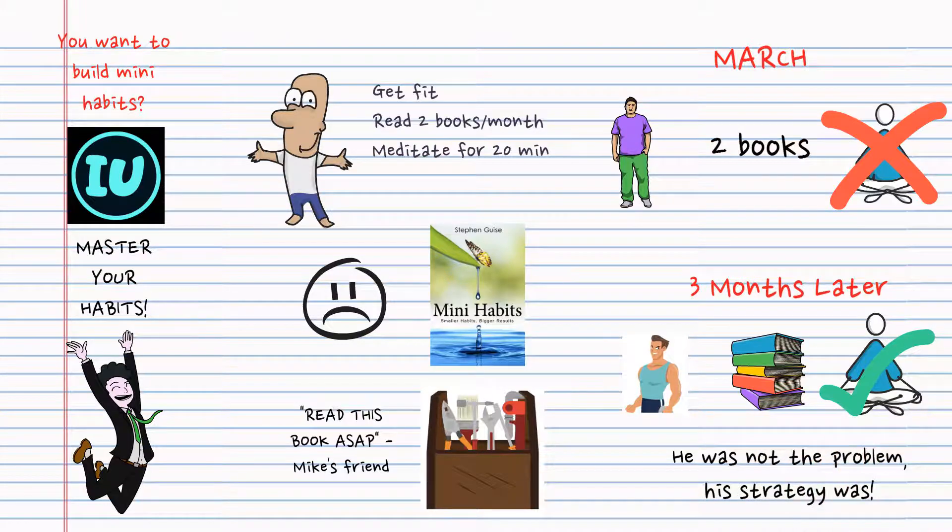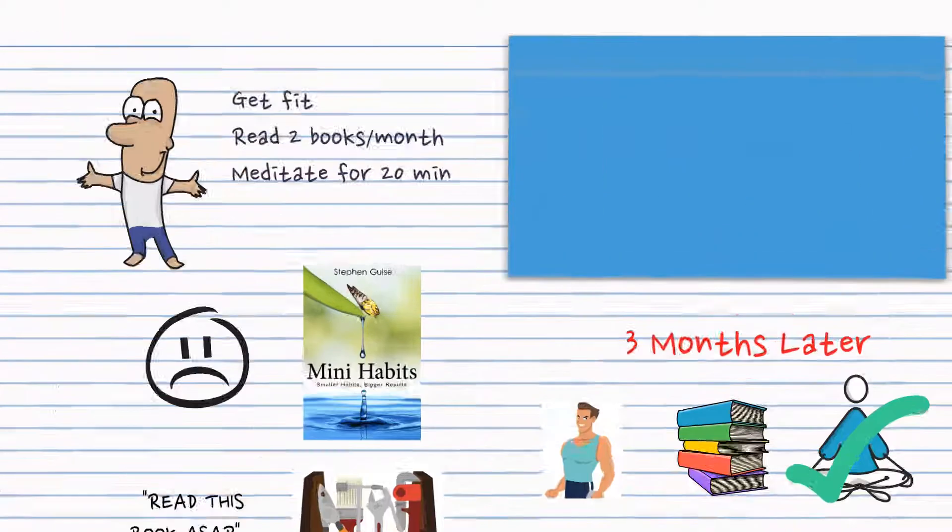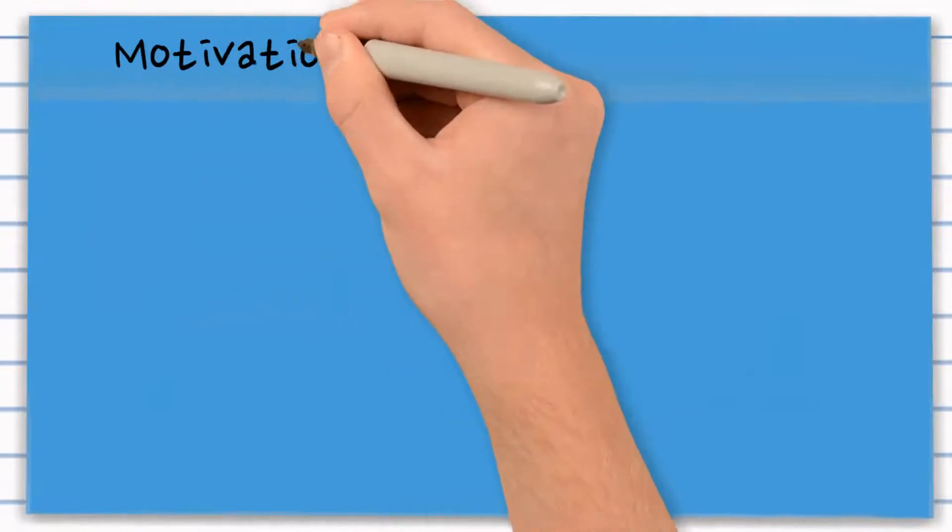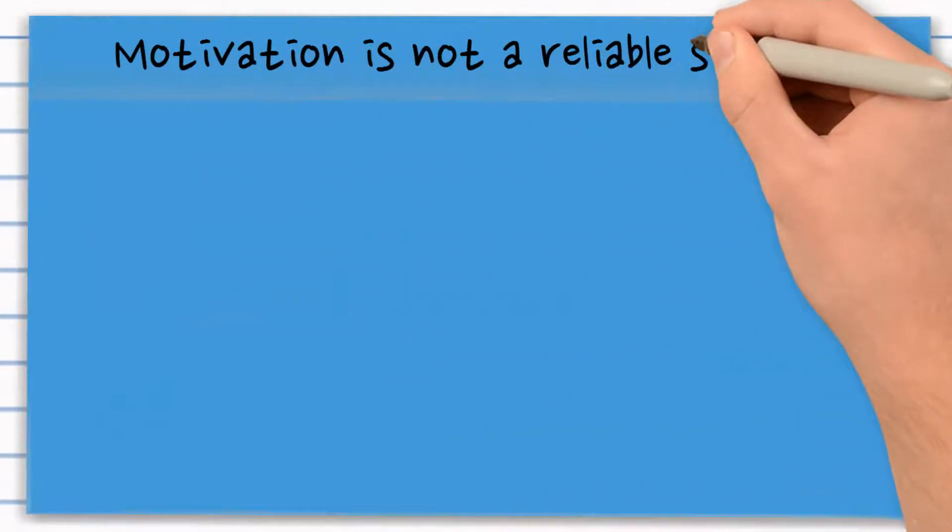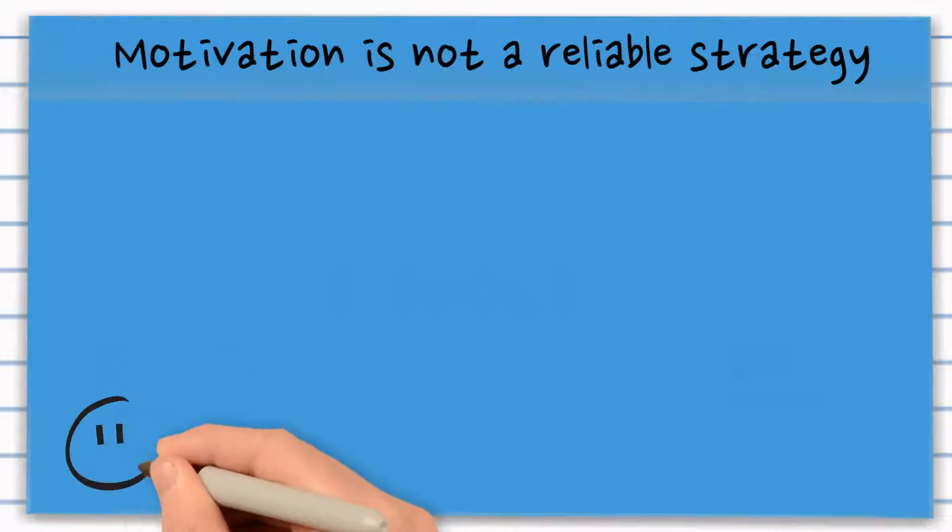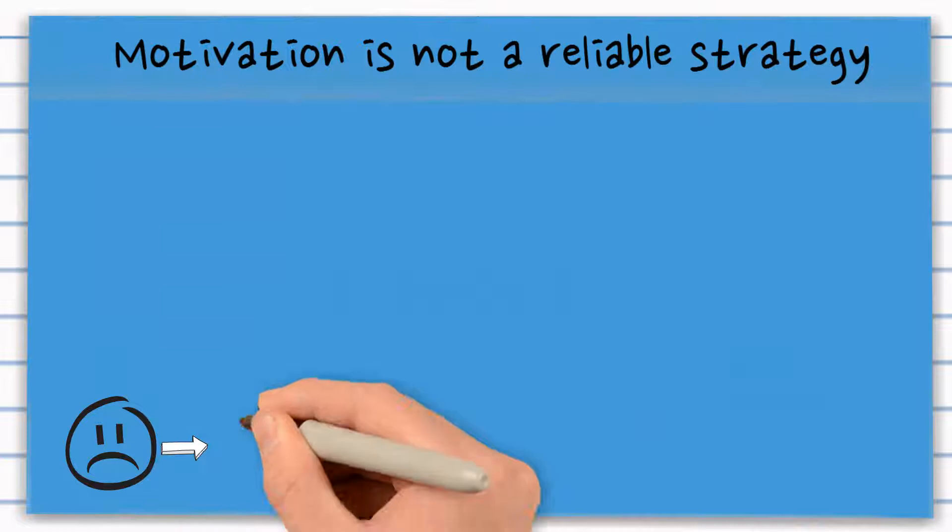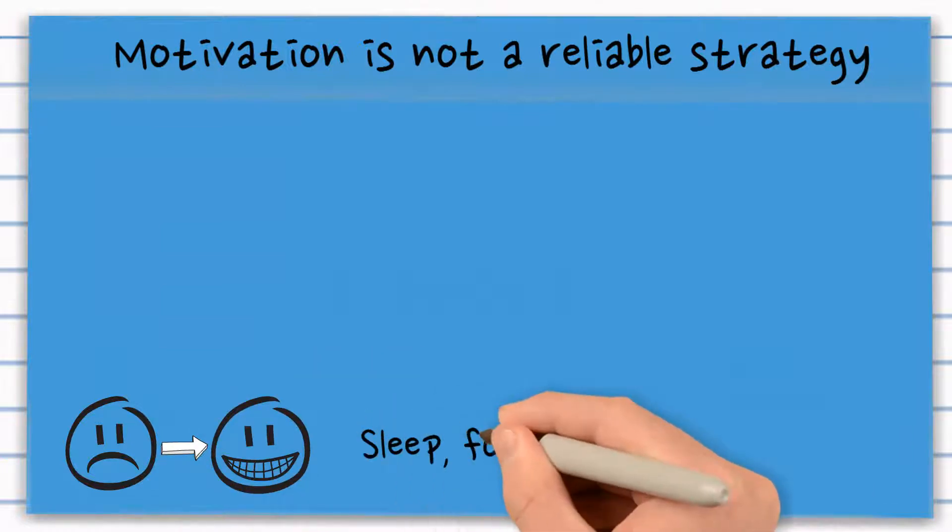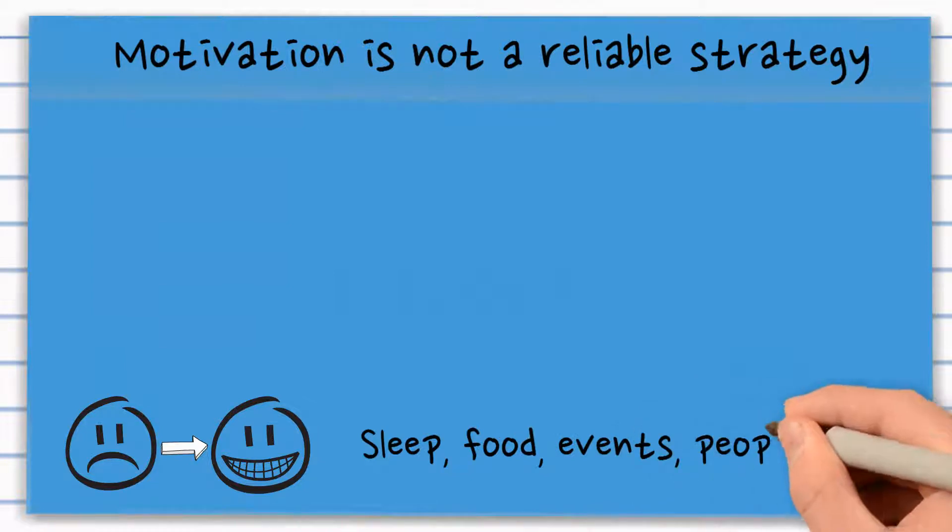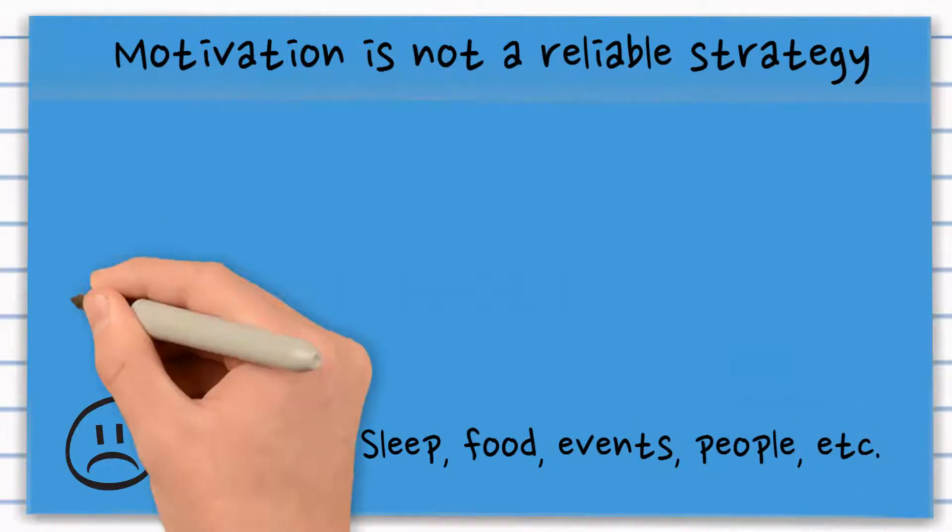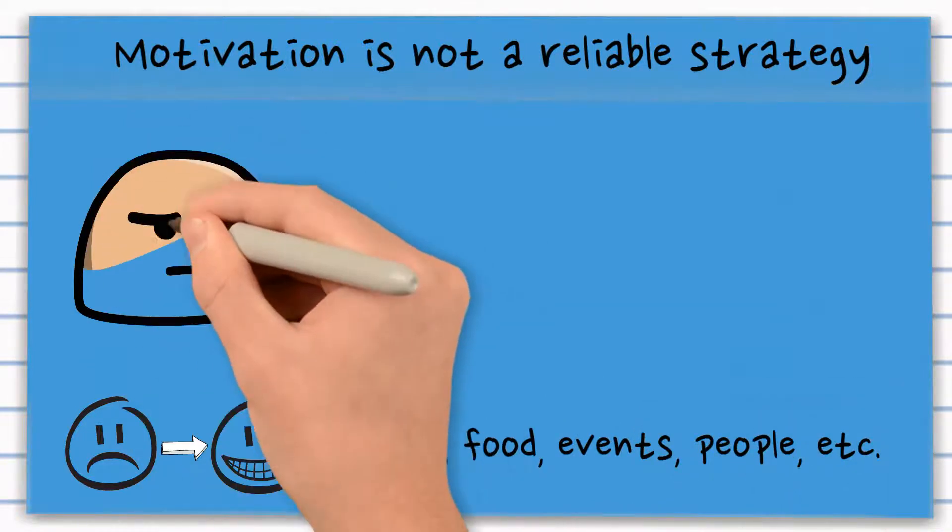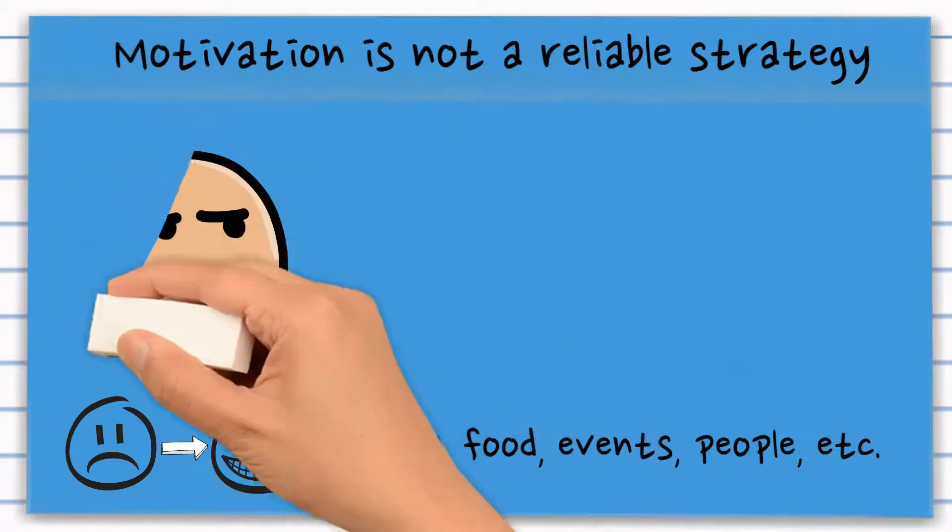Does this story sound familiar to you? Mike discovered that all the motivation he felt in New Year's Eve was not a reliable strategy. Motivation depends on the emotions you are feeling, and our feelings are very volatile. Feelings can be altered by sleep, food, events, people, etc.